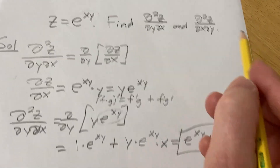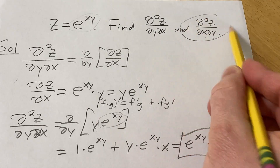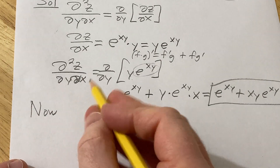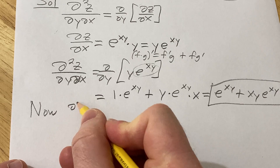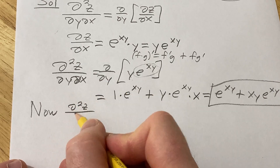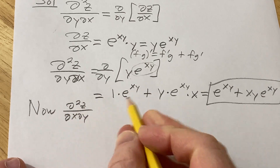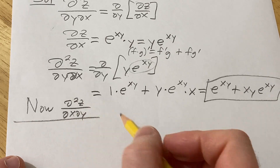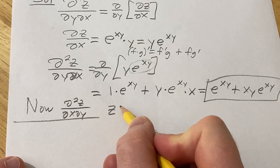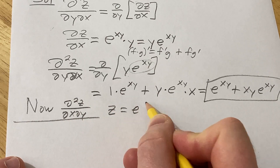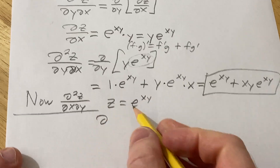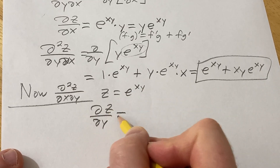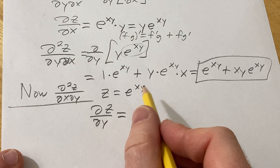So now let's go ahead and find the other one. Let's find the second-order partial derivative of z with del x del y. So first we have to find del z/del y. Let me go ahead and write z again so you can see it.